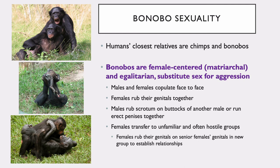Humans' closest relatives on the tree of life are chimps and bonobos. Bonobos in particular live within female-centered or matriarchal groups. They are egalitarian, and these groups very often perform sexual acts to form peaceful bonds with each other because they prefer to use sex rather than have violence amongst themselves or between groups. Both males and females copulate face-to-face. Females tend to rub their genitals together. Males have been seen to rub their scrotums on the buttocks of another male or to rub their erect penises together. Females transferring to an unfamiliar or hostile group will seek out senior females within the new group to rub their genitals on again, to form these new sorts of relationships.